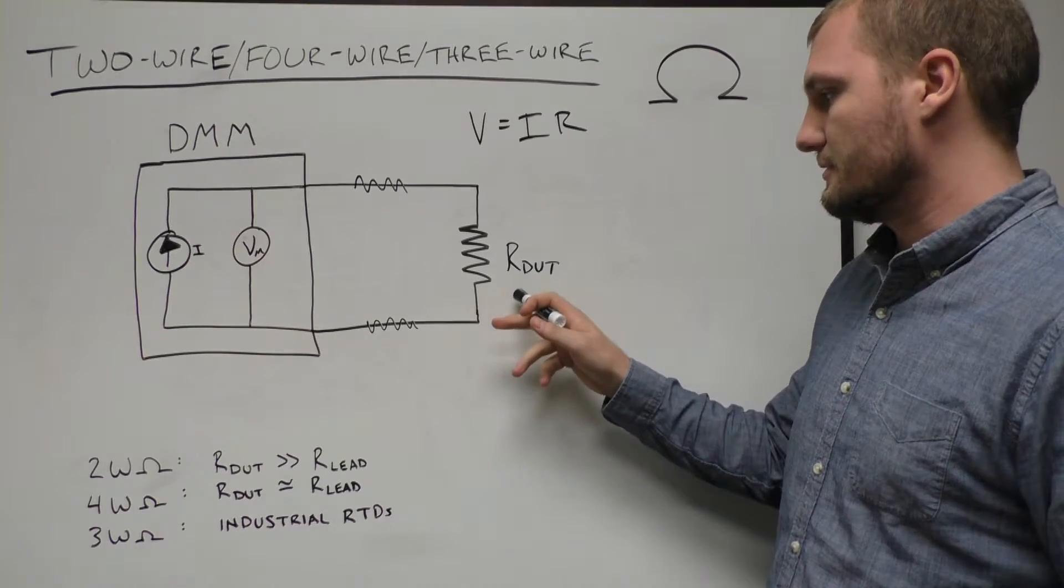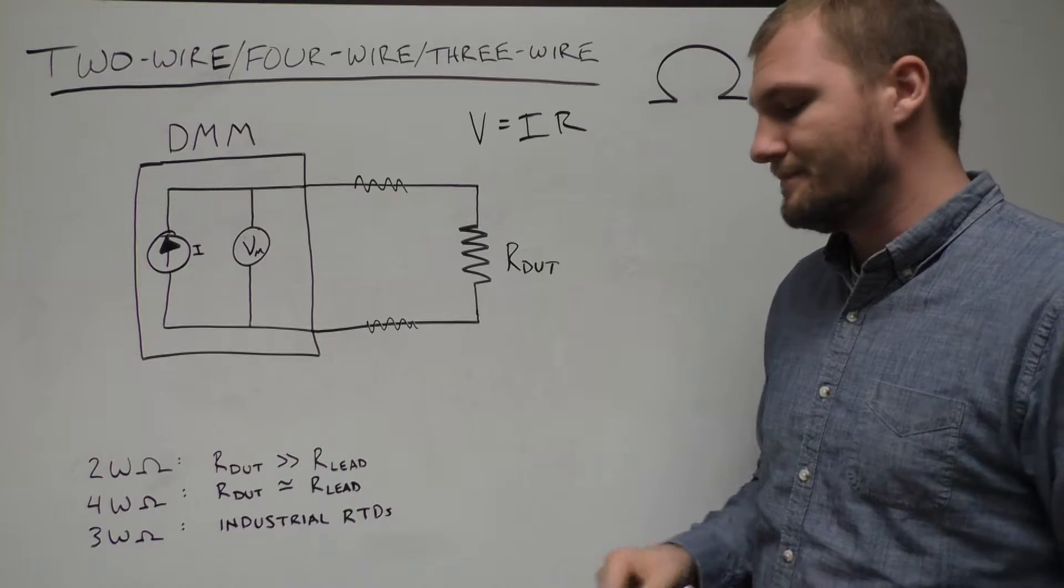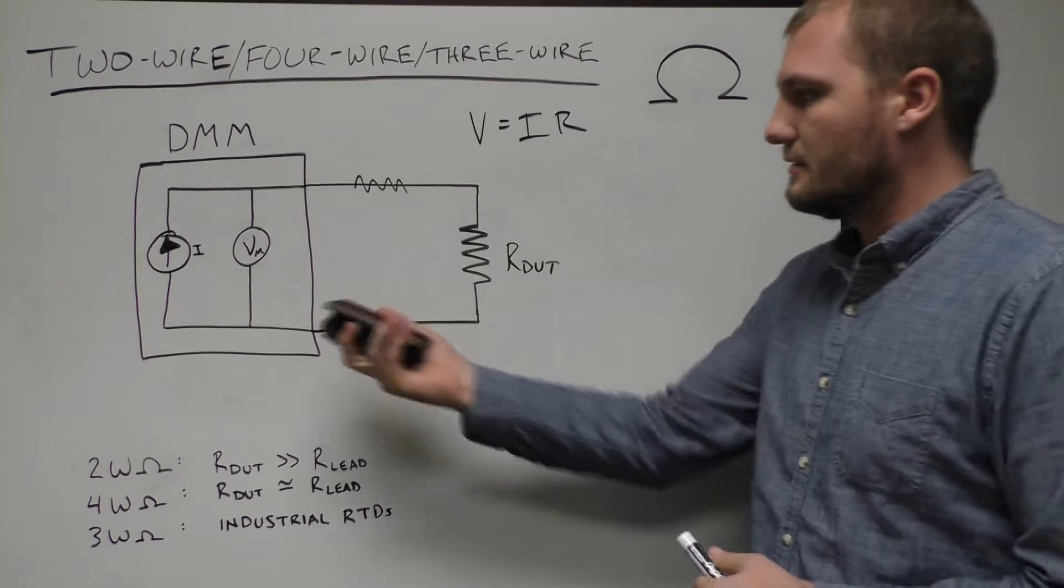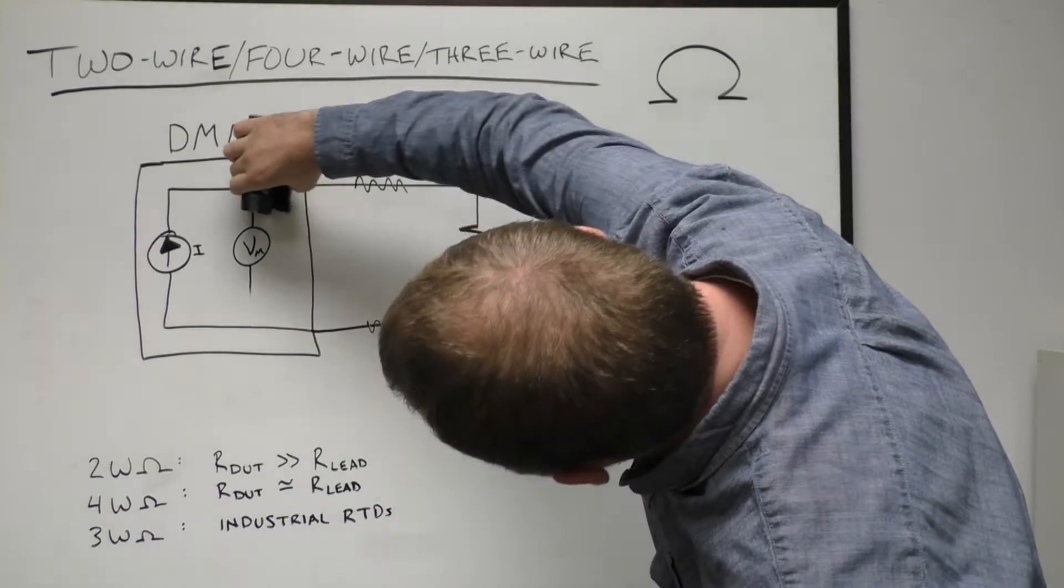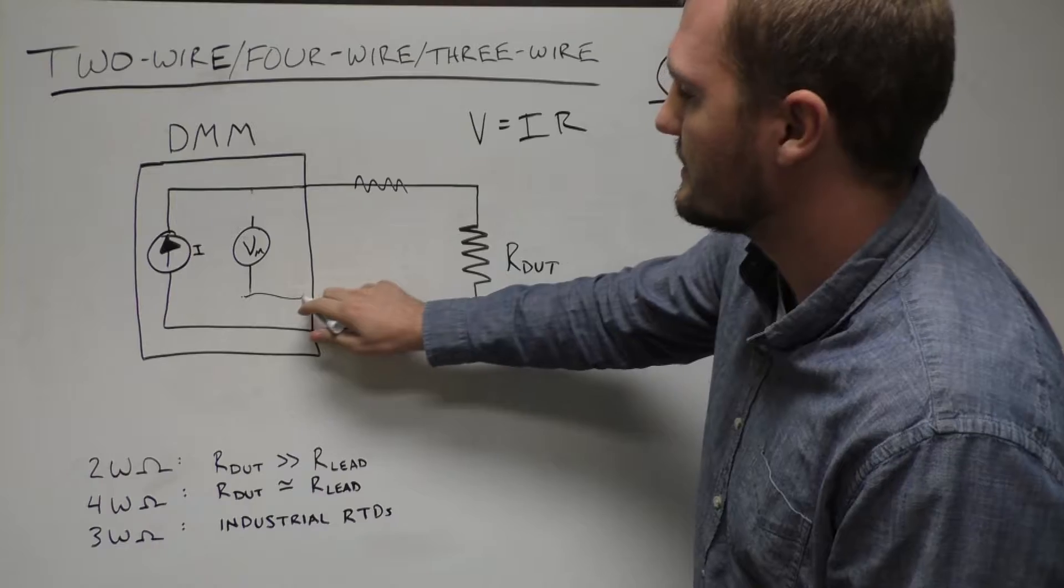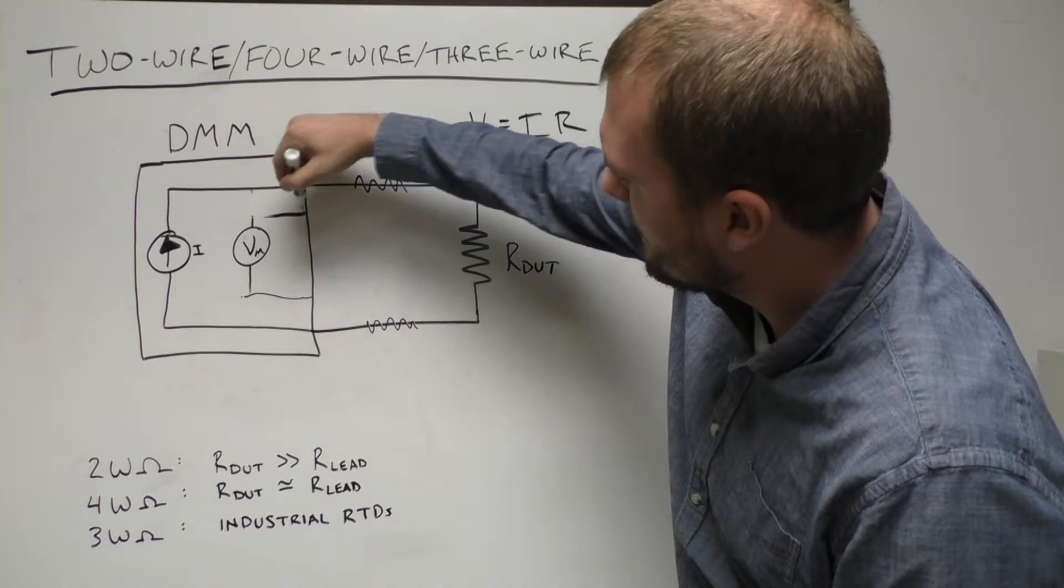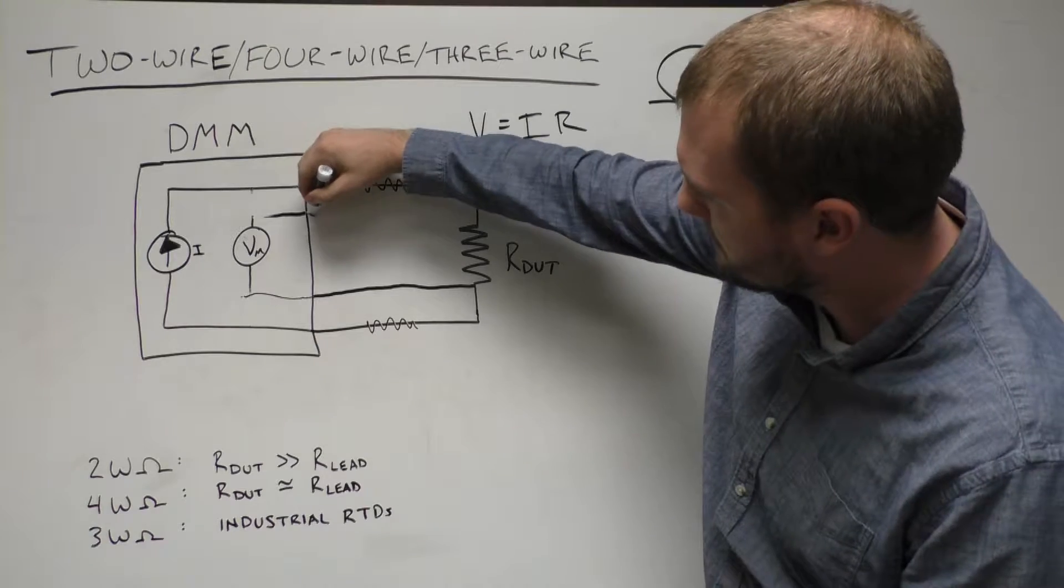Now, if you are measuring a lower resistance DUT, you would want to use something like 4-wire, and in that method, we take the voltmeter and we break it off and put it on its own separate set of what we call sense leads. And these sense leads are attached as close as possible to the device under test.